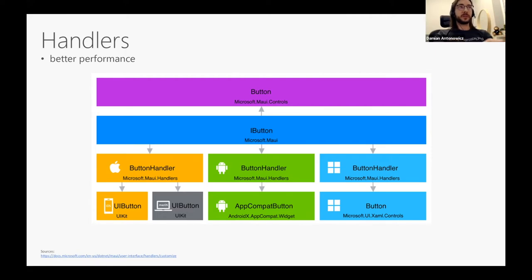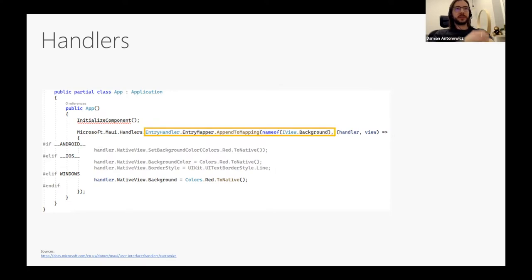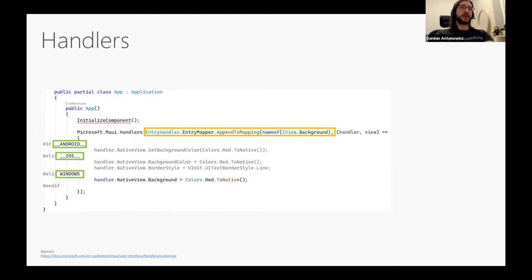The new handler architecture is very flexible — you can create your own handler for a UI component, for example drawing controls on canvas instead of using native components. Here is a basic example of accessing platform-specific code for an Entry component: we append a mapping to the background property of our Entry, and with preprocessor directives we access platform-specific code using the NativeView property, setting background to red on every platform.